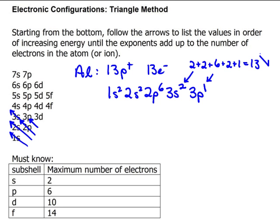Alright, so that is aluminum, the electronic configuration for aluminum using the triangle method. There you go: 1s2, 2s2, 2p6, 3s2, 3p1.